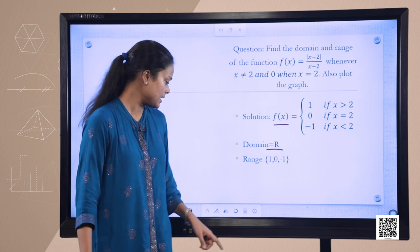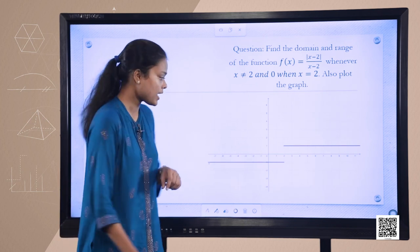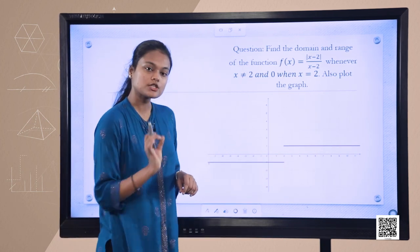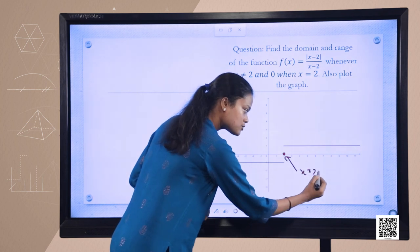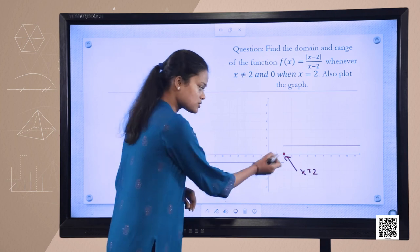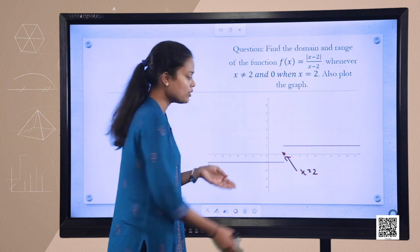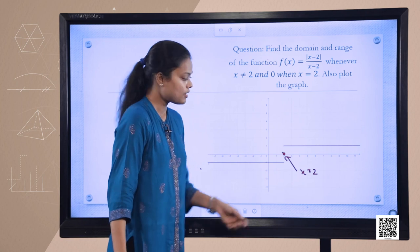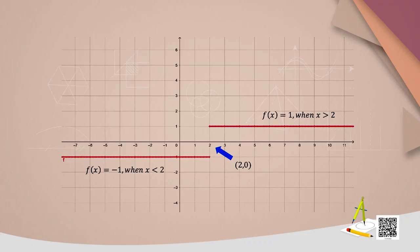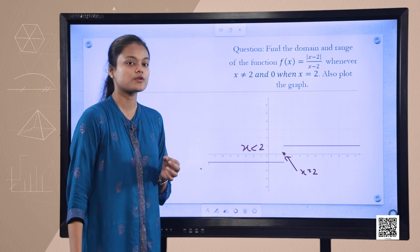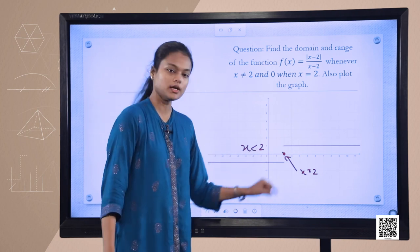The graph of this function is the same as the signum function, but the break occurs at x = 2. When x equals 2, the value of the function is 0. When x is greater than 2, a line parallel to the x-axis at height 1. When x is less than 2, a parallel line below the x-axis at distance 1.